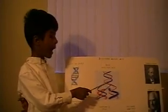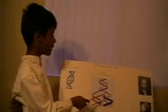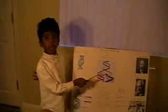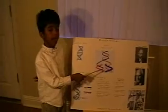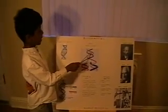They can only attach in a very specific way: adenine can only go with thymine and guanine can only go with cytosine. The old strand determines the composition of the new strand. The new strand is formed, made up of one new strand and one old strand.